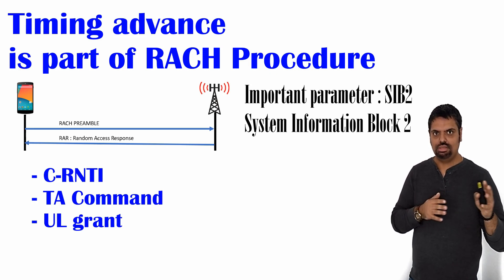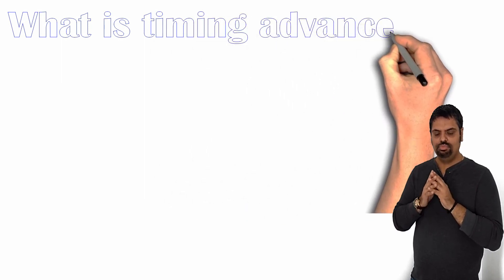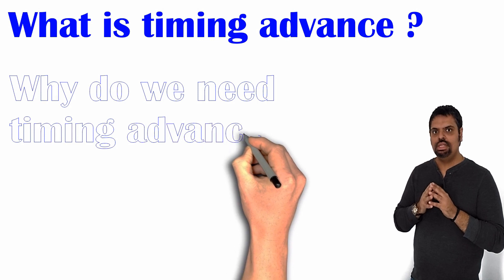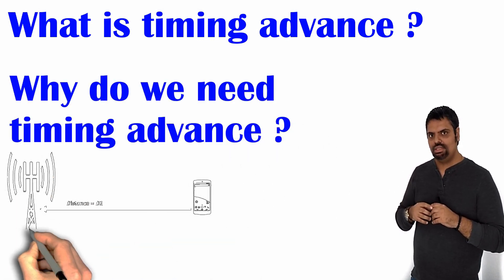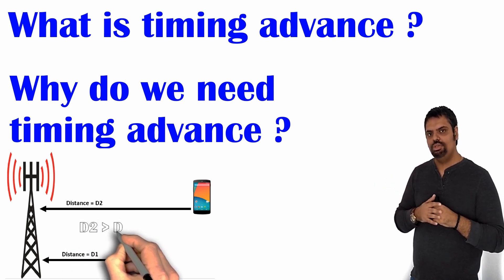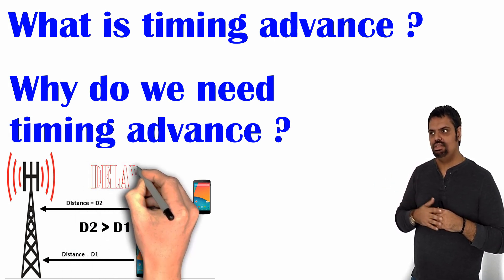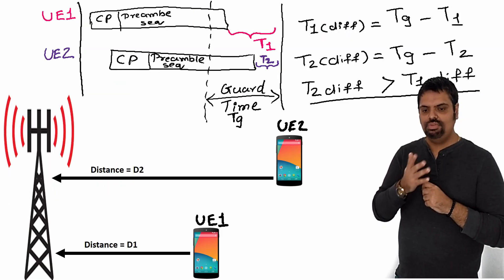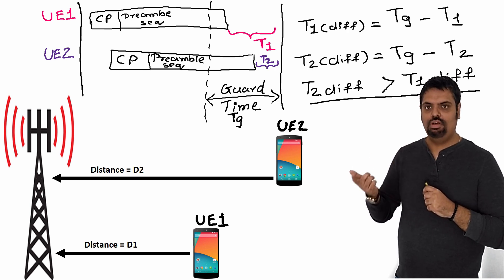Let's focus on timing advance. What is timing advance and why do we need it? Let's say there are two UEs: one UE is at the cell edge, which is at the farthest distance from the eNB, and one UE is in the nearby area. So definitely there is a delay, or what we call it as propagation delay.